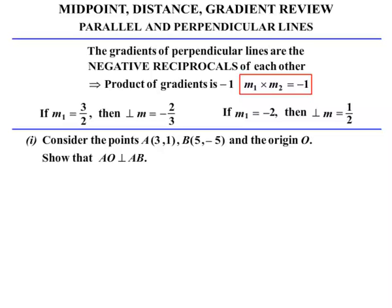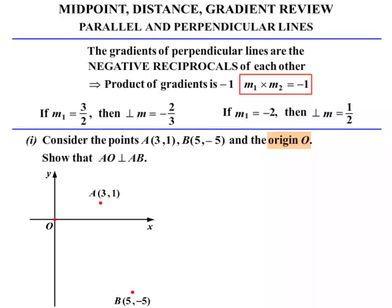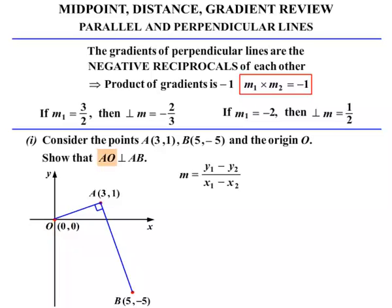We're asked to consider points A (3, 1), B (5, -5) and the origin O (0, 0), and show that AO is perpendicular to AB. It's always good to draw a little sketch. Because we're dealing with perpendicular lines, we're interested in the gradient. For AO, using the gradient formula with Y values 1 and 0, and X values 3 and 0: (1 minus 0) over (3 minus 0) simplifies to 1/3.